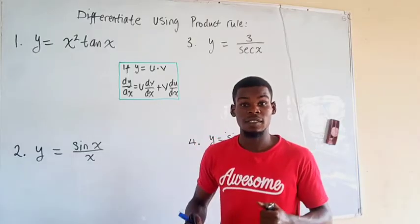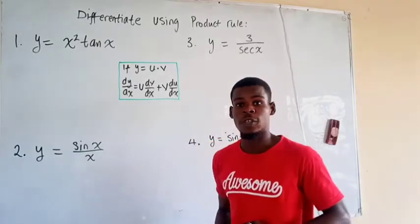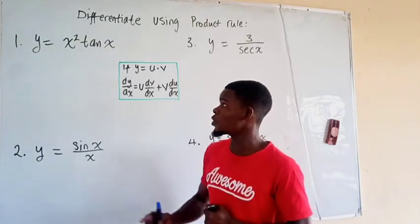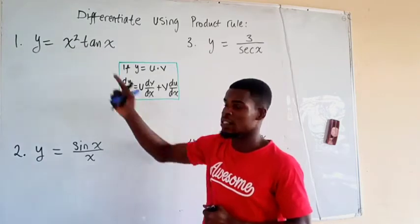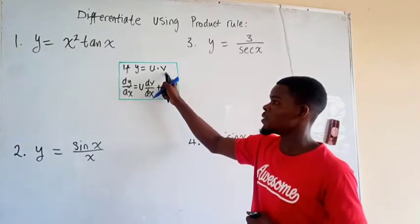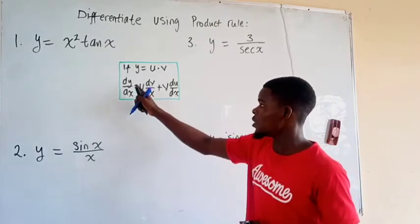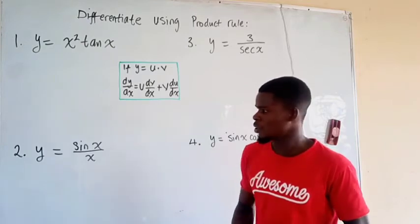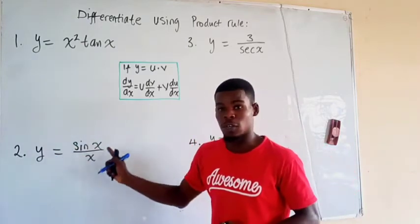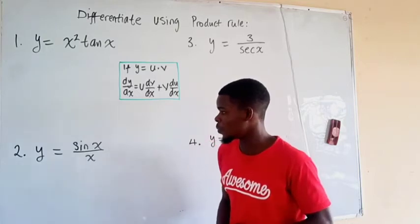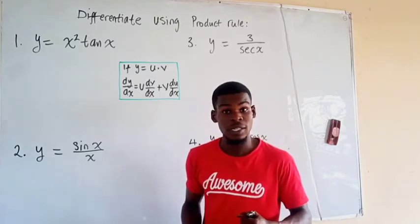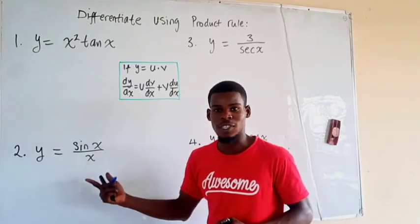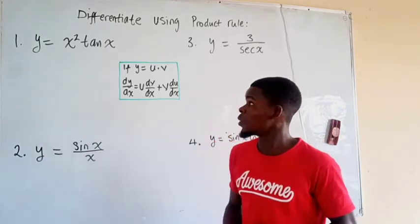Welcome to this video where we'll differentiate the following functions using the product rule. The product rule tells us that whenever we have a function written as a product of two terms — in general u times v where u and v are functions of x — we can use this rule to get the derivative. You may be curious about the second one having a fraction; you can still use the quotient rule, but here I'm going to show you we can also use the product rule.